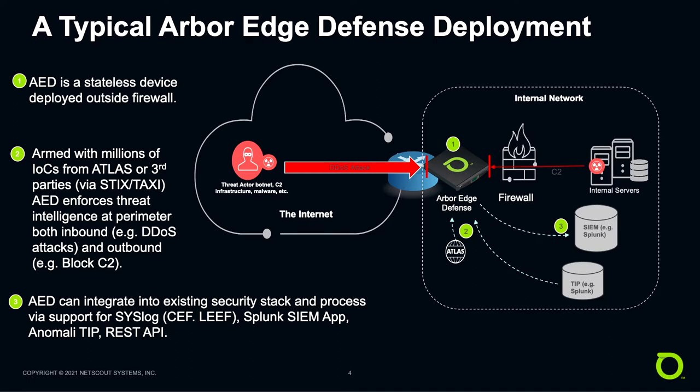The Arbor Edge Defense unit is typically placed right at the edge of the enterprise, just south of the service provider handoff by router or ethernet. While this is important for the protection of stateful devices like firewalls, load balancers, IPS and IDS, it's also a prime location for blocking incoming and outgoing threats.